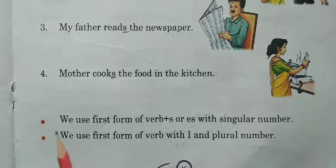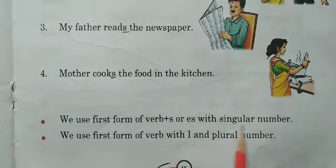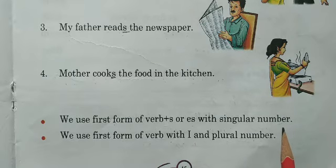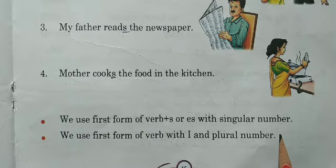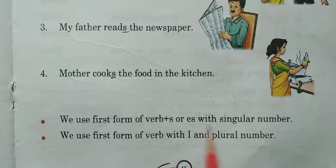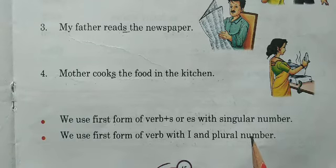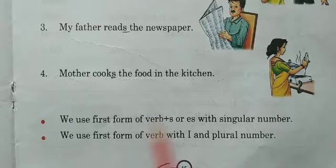Kuch rule yeh kehta hai: we use the first form of verb with S or ES with singular number. Singular number means he, she, it — aur koi bhi naam ho, jaise the boy, the cow — ya singular number ke saath verb ki jo first form hoti hai, us mein hum S ya ES ko add karte hain. Verb aap log pichle jo chapters hain, us mein padh chuke honge.